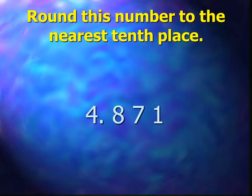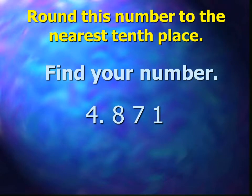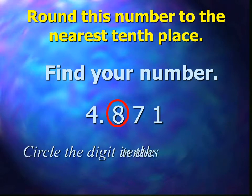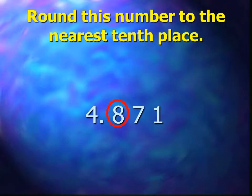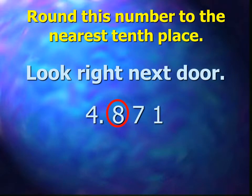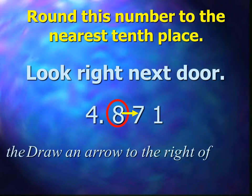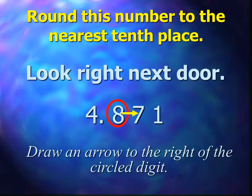Round this number to the nearest tenth place. Find your number. Circle the digit in the tenths place — in this case, the digit eight. Look right next door. Draw an arrow to the right of the circled digit. The arrow is pointing to the hundredths place — in this case, the digit seven.